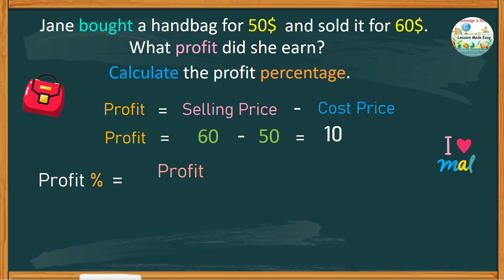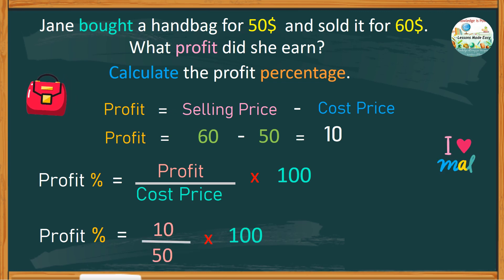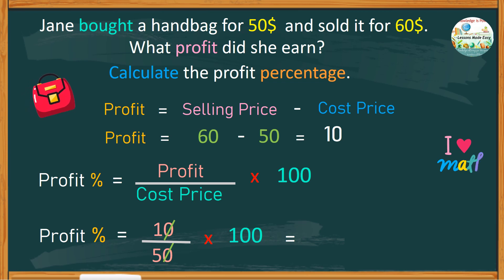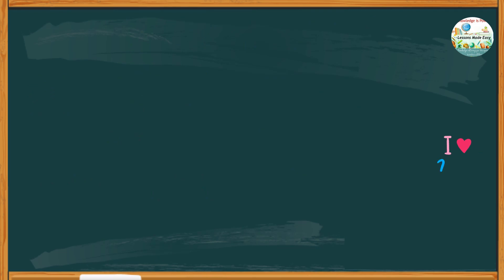To find the profit percentage, we have the profit over the cost price times 100. So profit percent equals $10 over $50 times 100. Cancel one zero above and do the same with the other zero below. Now we have 100 over 5, or 100 divided by 5, which equals 20. So the profit percent is 20%.